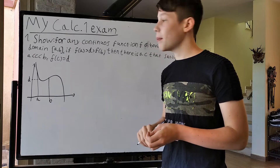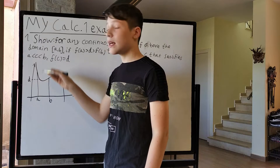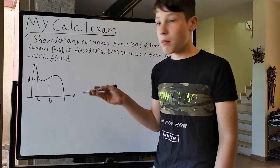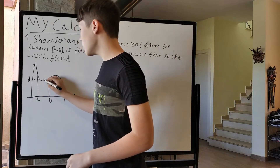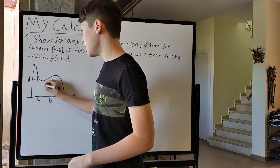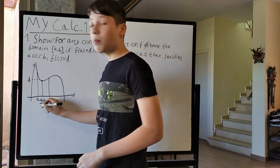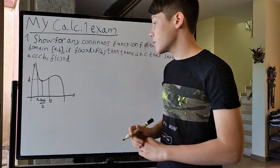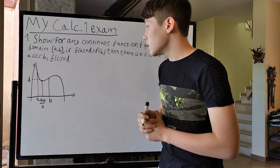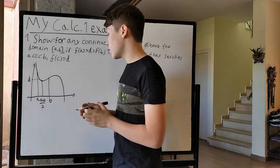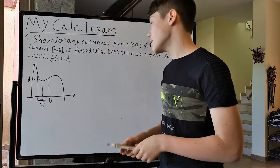Let's try to think about in what domain c has to be. Well, of course c has to be between a and b, but we might be able to make it narrower. Because if we look at the average of a and b — so (a + b)/2 — we'll be able to say if f((a + b)/2) is smaller than d, which it is in this case, then our c is probably only between a and (a + b)/2.